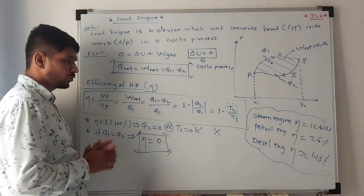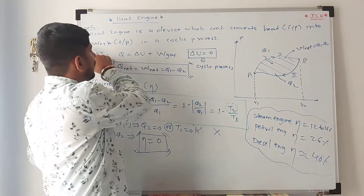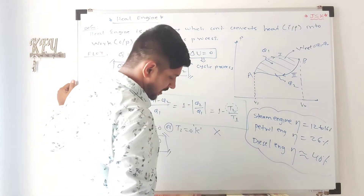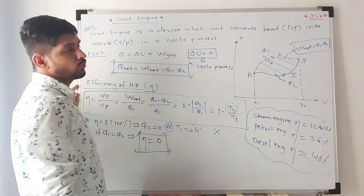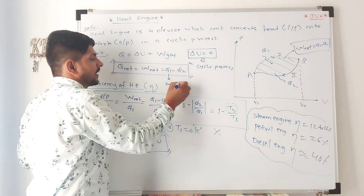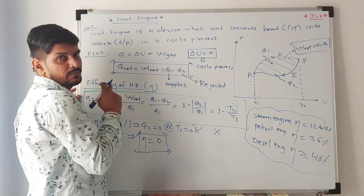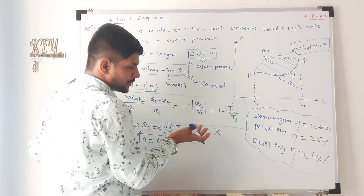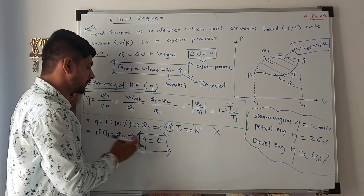So this is all about heat engine. To revise: a heat engine is a device which continuously converts heat into work — heat is the input and work is the output. From the PV indicator diagram, the area under the PV curve is nothing but the net work. Net work equals Q1 minus Q2 — that is heat supplied minus heat rejected. Their difference is the net heat involved, equal to net work. And efficiency formula is 1 minus Q2 by Q1, equal to 1 minus T2 by T1. We cannot have efficiency equal to 100%, and efficiency equal to zero means the engine is useless.